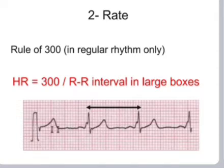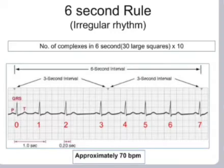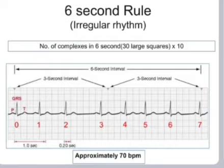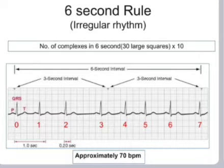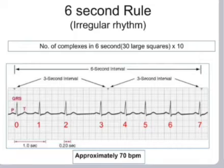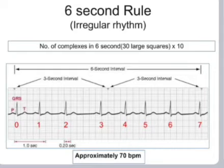Second, check for the rate. If the rhythm is regular, heart rate is 300 divided by the RR interval in large boxes. The six-second rule for irregular rhythms: count the number of QRS complexes in six seconds (30 large squares) and multiply by 10. For example, seven QRS complexes in six seconds gives 70 beats per minute.